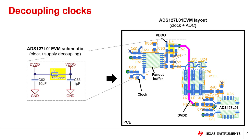Comparatively, the ADS127L01 EVM layout image on the right shows a larger portion of the circuit and includes the schematic components from the image on the left within the gray box on the right. Note that the ferrite is highlighted in yellow, while the DVDD trace is highlighted in pink. The next slide compares the power supply signal at the VDDO net as well as the ADS127L01 DVDD pin as measured on the EVM.